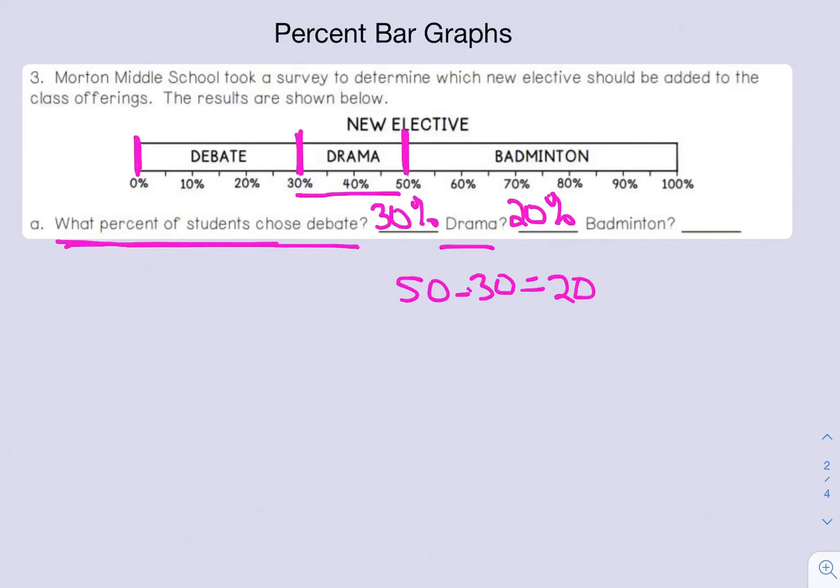Last one: what percent of students chose badminton? Badminton goes all the way to the end, so it stops at 50 and goes to 100 percent. So for this one we're going to subtract 100 minus 50 to give us 50. So 50 percent of students chose badminton.